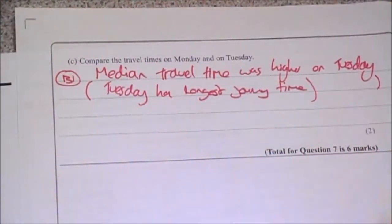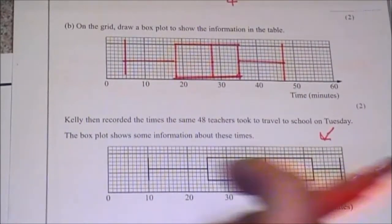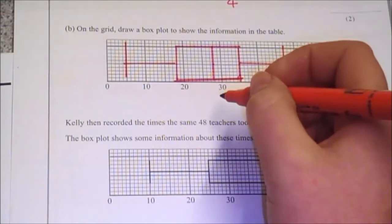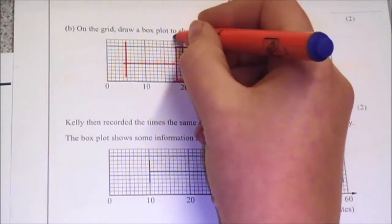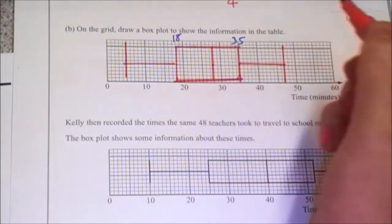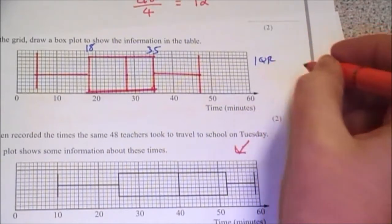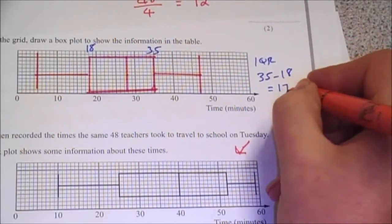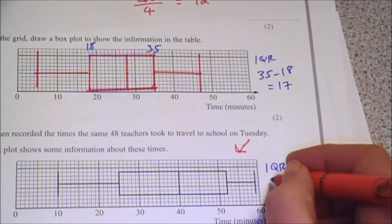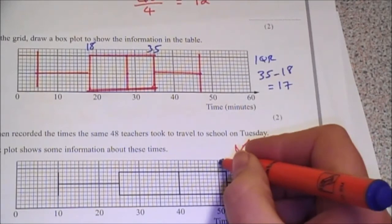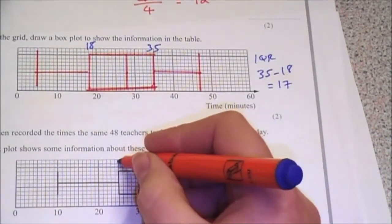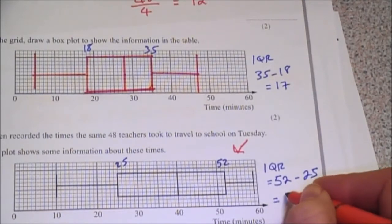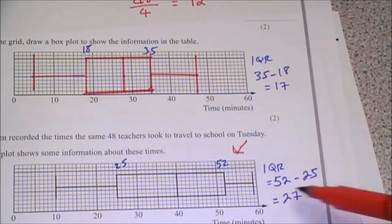The second mark comes from comparing the spread of the distribution. The easiest way is to find the inter-quartile range. For Monday, the lower quartile is 18 and the upper quartile is 35, so the IQR for Monday is 35 minus 18, which equals 17. For Tuesday, the upper quartile is 52 and the lower quartile is 25, so the IQR is 52 minus 25, which equals 27. Quite a big difference.